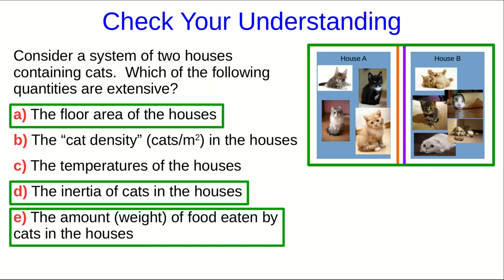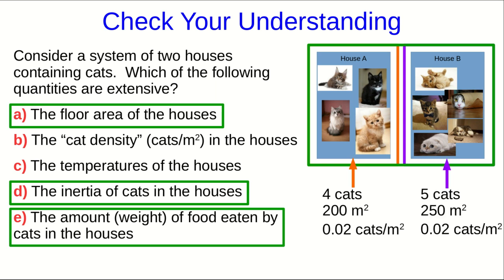The quantity you might have the most trouble with would be cat density. Students often have difficulty with densities or indeed any quantity that's a ratio. So let's go through it in detail. Suppose one house has four cats in it and it's 200 square meters, and the other house has five cats and it's 250 square meters. You can do the division and hopefully see that the cat density in each house is 0.02 cats per square meter.